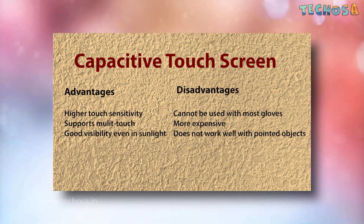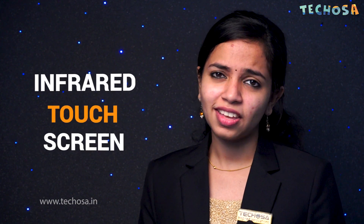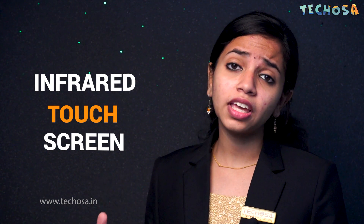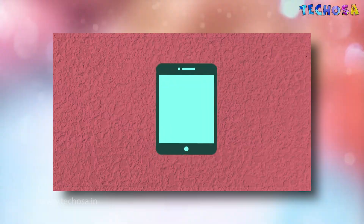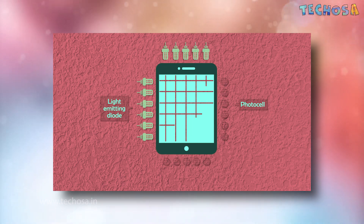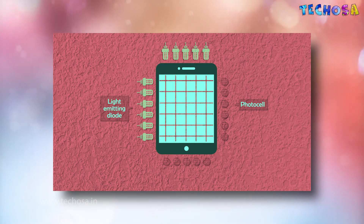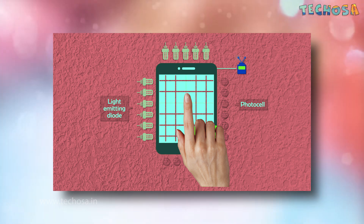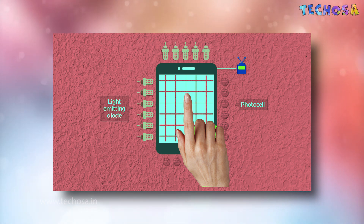Infrared touchscreen monitors do not overlay the display with an additional screen. Instead, infrared monitors use IR emitters and receivers to create an invisible grid of light beams across the screen. This ensures the best possible image quality. When an object interrupts the invisible infrared light beam, the sensors are able to locate the touch point.